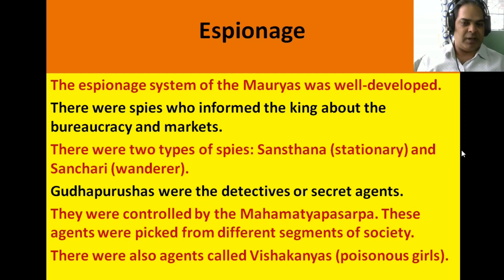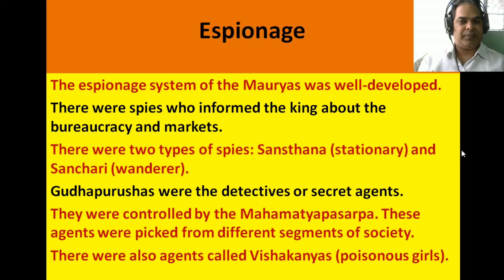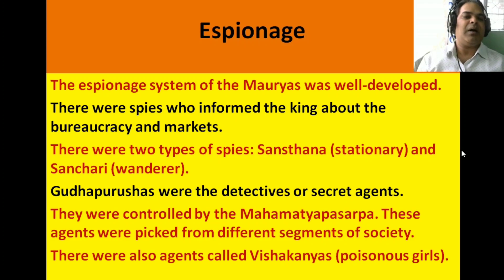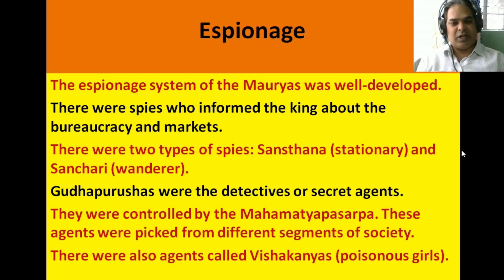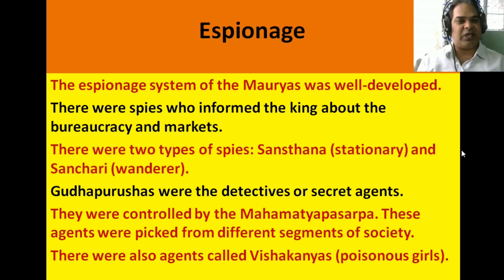Secret agents were known as Gudha Purusha — detectives or secret agents. They were controlled by the Mahamantya Pasharap. These agents were picked from different segments of society. There were also agents called Vishakanya — poisonous girls — who were very deadly agents used in the Mauryan spy network.